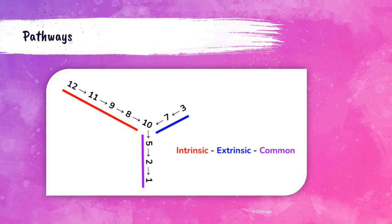Here is a summary diagram to help remember the pathways. The intrinsic pathway is factors 12, 11, 9, and 8, going into 10 which is part of the common pathway. The extrinsic pathway is factors 3 and 7, also going into 10. The common pathway consists of factors 10, 5, 2, and 1. Both the intrinsic and extrinsic pathways operate independently of one another. This matters because as laboratory professionals, we test these pathways.